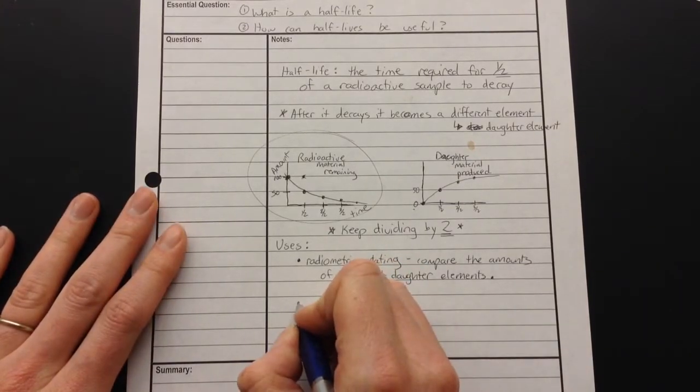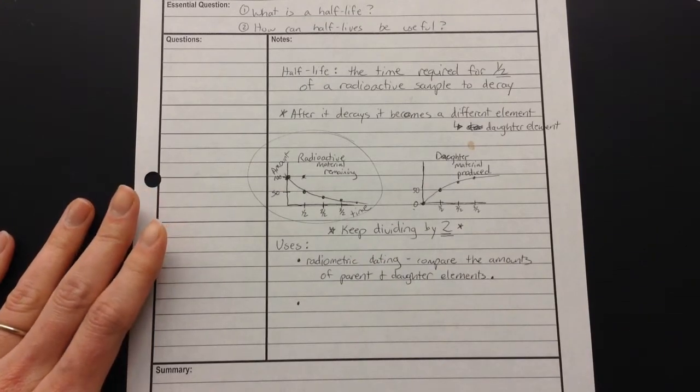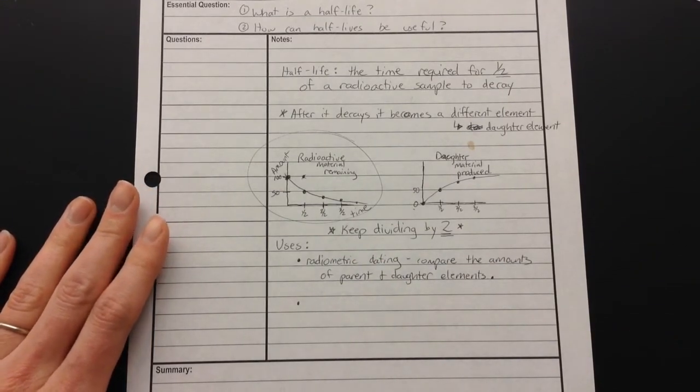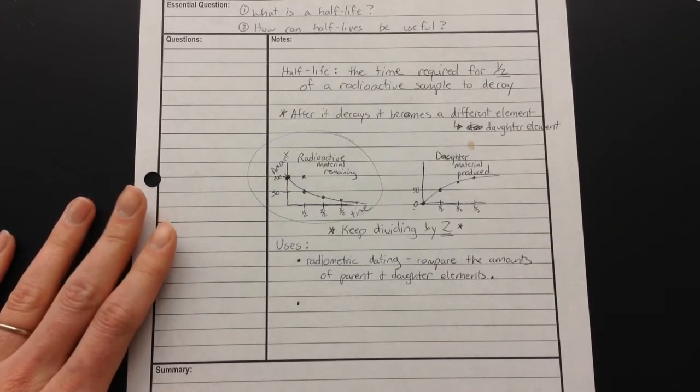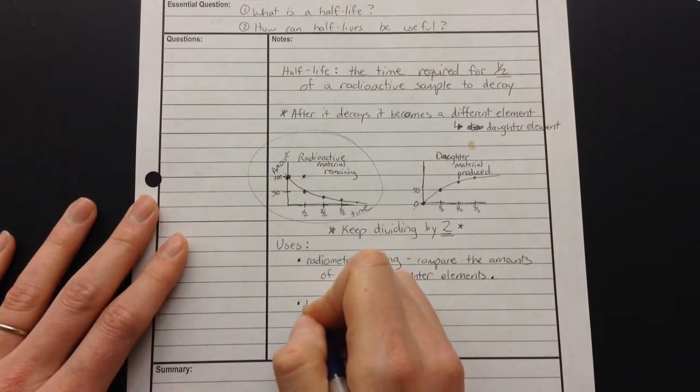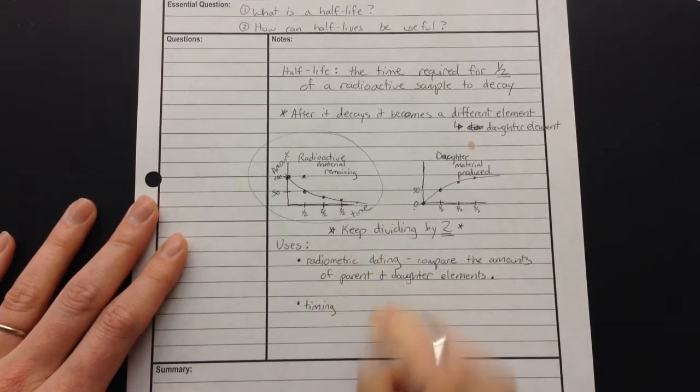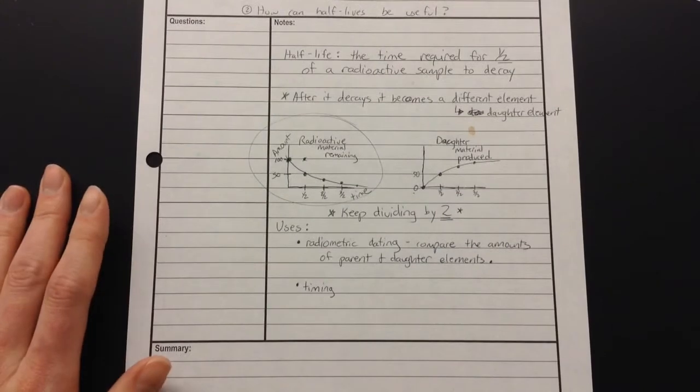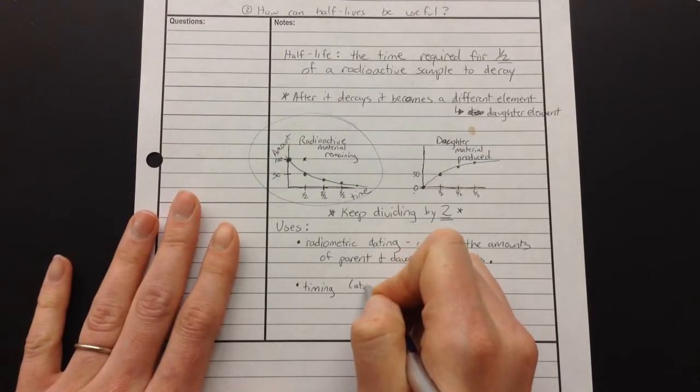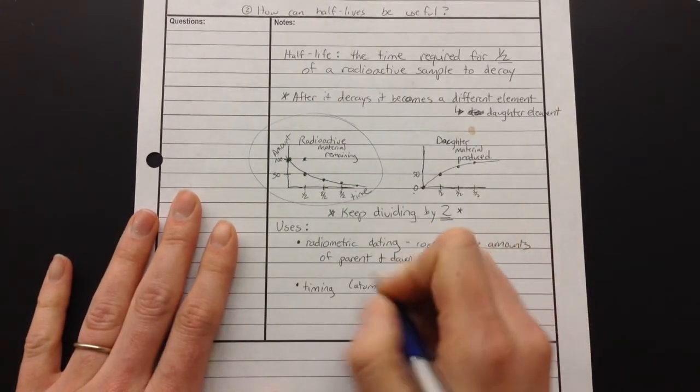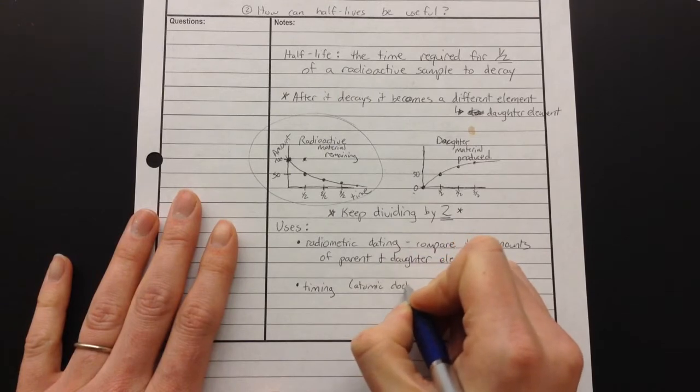So another use is that they use radioactive materials and those half-lives for timing. Maybe you've heard of an atomic clock. They use radioactive materials, and they look at those half-lives to make an atomic clock.